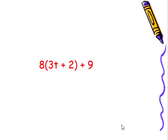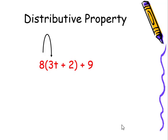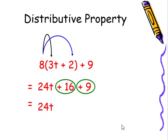So let's take a look at this one. This one's going to be 24T plus 16, and then bring down the nine. Now remember, constants are always considered like terms. So all we have to do is combine our constants, and we're left with 24T plus 25.